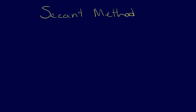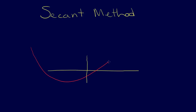The next method we're going to talk about is the secant method. The secant method is very similar to the Newton-Raphson method in that we try to use the derivative to find where the function intersects the axis and use that as our guess for the root. However, the Newton method requires not only that we evaluate the function f(x), but we also have to know f prime of x at the point. What happens if we don't know this derivative?